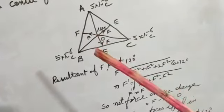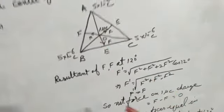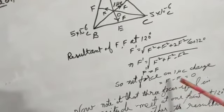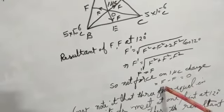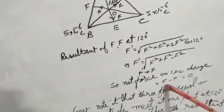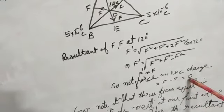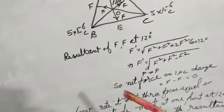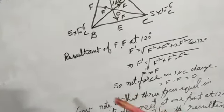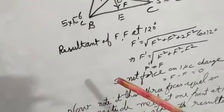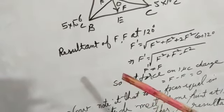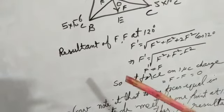Toh is tarike se ab aapka F dash F ke barabar hoga toh net force on microcoulomb charge will be equal to F minus F equal to zero. Toh yeh yaad kar lijiye numerical mein aapko ek kahin ne kahin usmein aayega. Ek number ka question bhi ho gaya ki agar charge equal hain, distance equal hain, triangle ke center ka, toh net force aapka zero aayega.